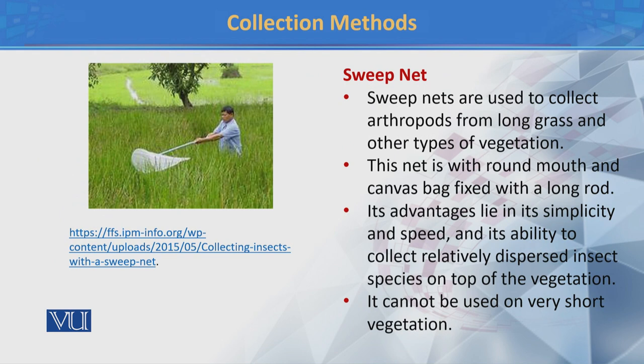इसी तरीके से दूसरा method है — sweep net. Sweep net जो है ये जो vegetation है या long grass है, वहाँ से insects को collect करने के लिए इस्तमाल किया जाता है, खास तौर पर जो dispersed insects होते हैं। इस method के अंदर जो हम sweep net का इस्तमाल करते हैं, ये एक canvas bag है जिसका round mouth है और इसके साथ एक long rod होता है। ये एक बहुत ही effective और आसान method है insect की collection के लिए। Entomology के अंदर इस किस्म के जो traps हैं उनका इस्तमाल बहुत ज़्यादा होता है, और ये बहुत popular method है insect collection का।